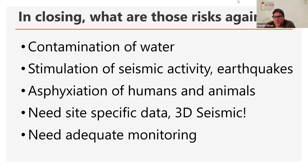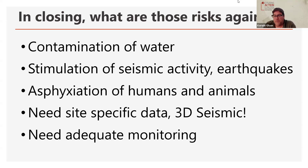In closing, remind us what those risks were that we talked about at the very beginning: potential contamination of our water, stimulation of seismic activities and earthquakes, and asphyxiation because of that migration of the CO2 plume. As we said, we need site-specific data about this stuff, and that site-specific data has just not been acquired yet. That is a critical piece of information that we need. And we need adequate monitoring. Those risks are real. We need more information — this dirty data, this insufficient data, this lack of transparency needs to end, and we need study and we need information.